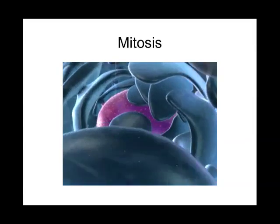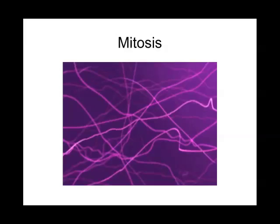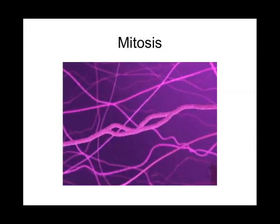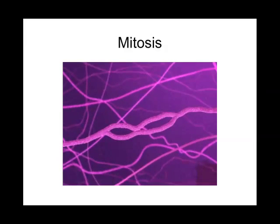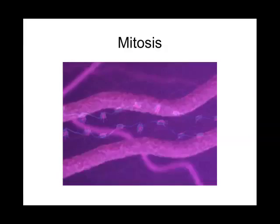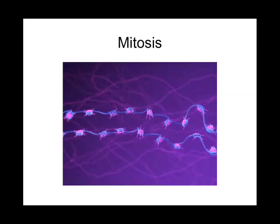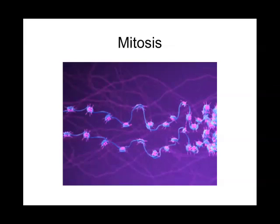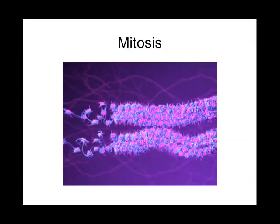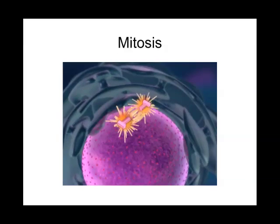Before a cell can divide, it must first duplicate the chromosomes stored in its nucleus. During chromosome duplication, several bubbles open up along the chromosome. Each bubble grows until it merges with an adjacent bubble. Each chromosome now consists of two identical copies called sister chromatids. Getting closer, we see that each sister chromatid consists of DNA wound around small proteins called histones. The sister chromatids begin to coil into tight helical fibers.